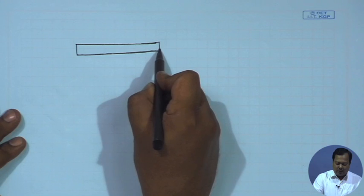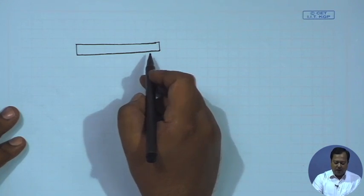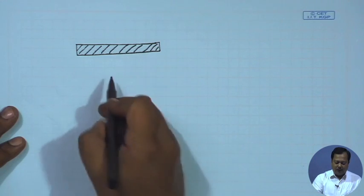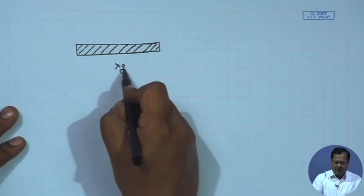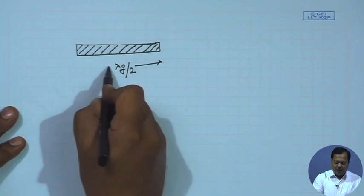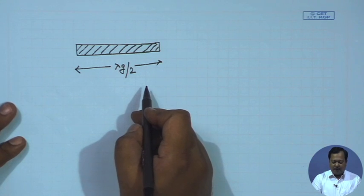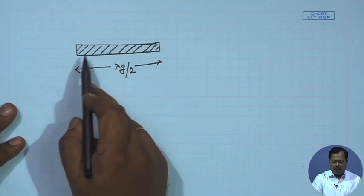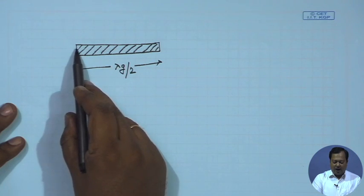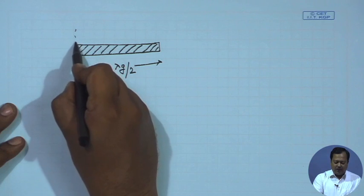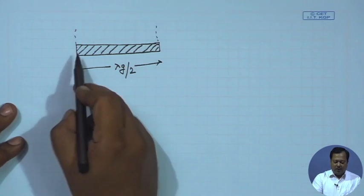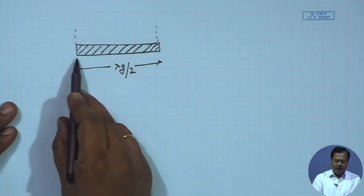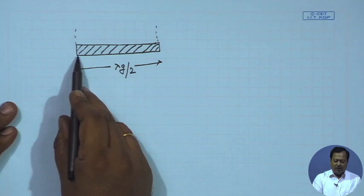This shows a microstrip line top view — I am drawing just the metallic strip part. When its length is λg/2 it will resonate. Both ends of the microstrip line are open-circuited, so we have high electric field at the left and right-hand side planes. From the fringing fields, if the electric field and magnetic field are in the same phase, there will be some radiation.